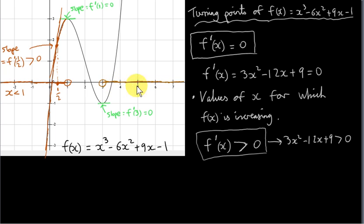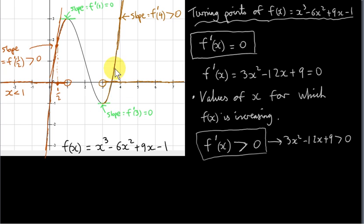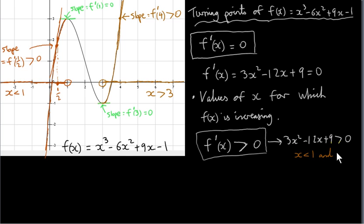Imagine walking along the x-axis from x equals 3 up to plus infinity — you will see the curve rising. Taking a particular value greater than 3, say x equals 4, f prime of 4 is greater than 0 and we get a line with a positive slope. This holds for any x greater than 3. But we exclude x equals 3 because at x equals 3 the slope of the tangent is 0 — we have a horizontal tangent there. So the solution to this quadratic inequality is x less than 1 and x greater than 3.